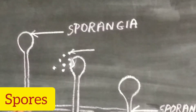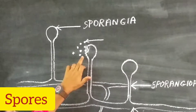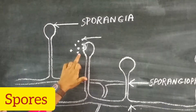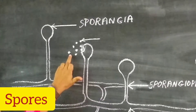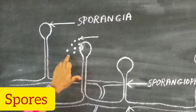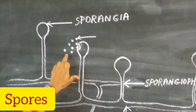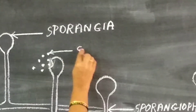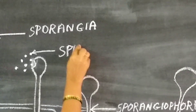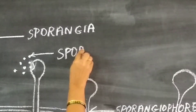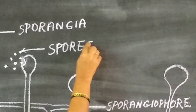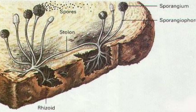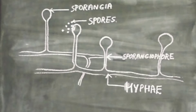When the sporangia mature, they burst open into the air and the spores get dispersed into the air. Thus the Mucor or the bread mold undergoes sexual reproduction.